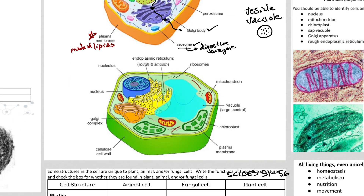Don't forget that plant cells have three unique items: they have a cell wall made of cellulose, they have chloroplasts that do photosynthesis, and they have a vacuole that is very large — in some cases taking up 70% of the cell — used as storage for water, sugars, and things like that.